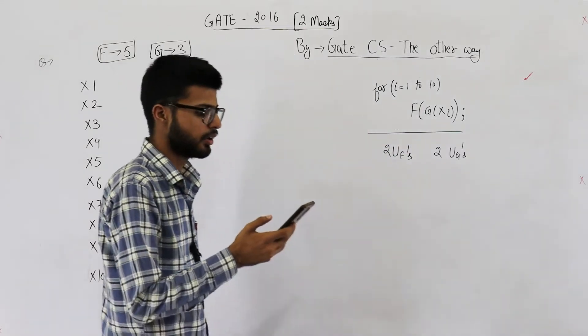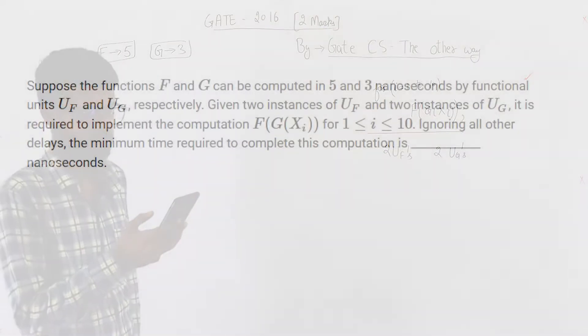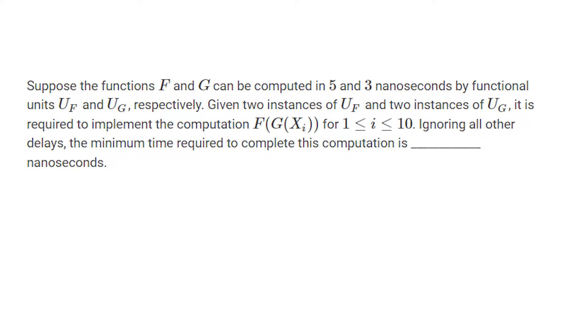It's a 2 marks question and they're saying suppose the functions f and g can be computed in 5 and 3 nanoseconds by functional units Uf and Ug respectively. Given two instances of Uf and two instances of Ug, it is required to implement the computation of f of g of xi for i goes from 1 to 10.